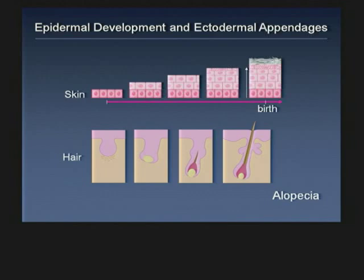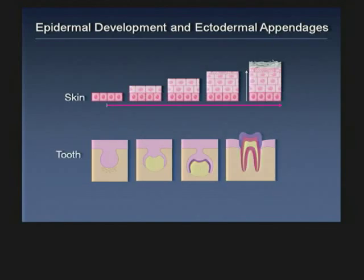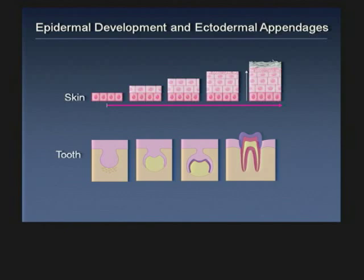Our hair is regenerated throughout our lives. Another ectodermal appendage is the tooth. It follows very similar initiating pathways and signaling factors — an initiating epithelial bud that culminates in the formation of the tooth. There are two clear distinctions between the hair follicle and the tooth: first, the tooth derives from the oral epithelia rather than the surface epidermal epithelia; and second, it is not regenerating. Once you lose a tooth, you cannot regenerate it. So even though development follows similar paths, the regeneration aspects are somewhat different.